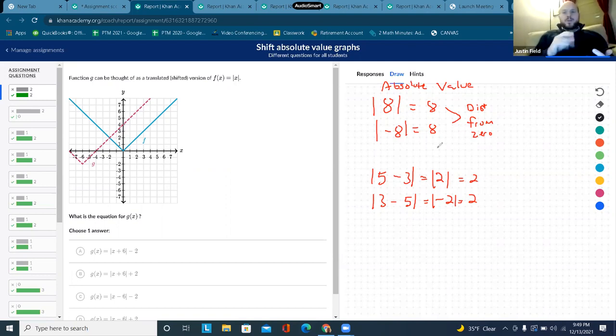But in Algebra 1, what we're going to do is we're going to talk about shifting the absolute value graph. This blue function is the basic absolute value function. F of x equals the absolute value of x. It is the line y equals x on the right side and the line y equals negative x on the left side. And it makes this graph.